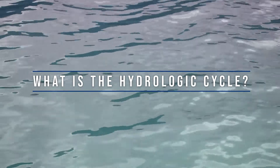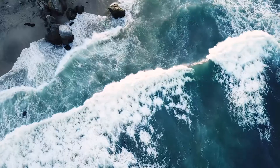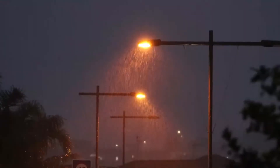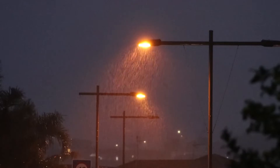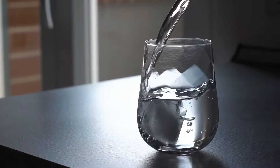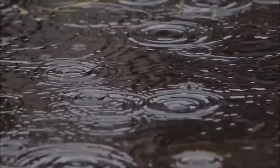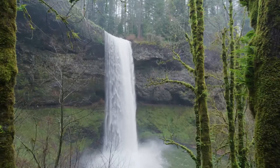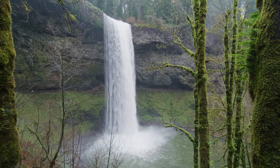The hydrologic cycle, also commonly known as the water cycle, is the endless and continuous movement of water on, above, and below the Earth's surface. You might think the water in your drinking glass or the rain puddles on the pavement is new, but it has actually always been here and is just part of the water cycle.